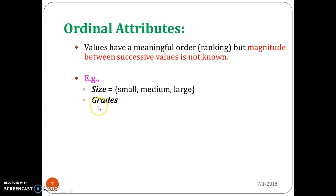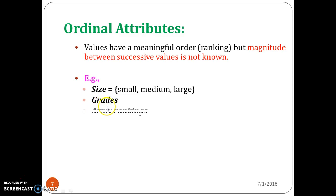Similarly, grades: you can determine whether a student got an S grade, E grade, or A grade. You know the grade and the ranking — which is first and which is last in order. But you cannot calculate the successive value between the grades. Similarly, ranking is another example of an ordinal attribute.